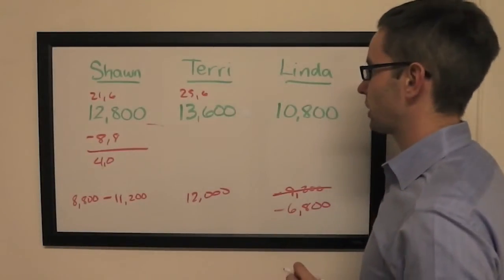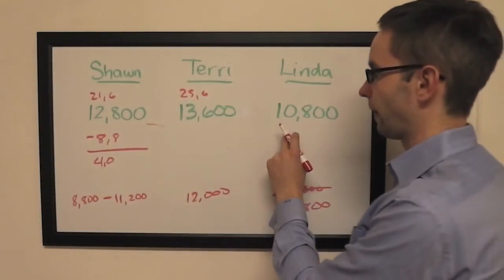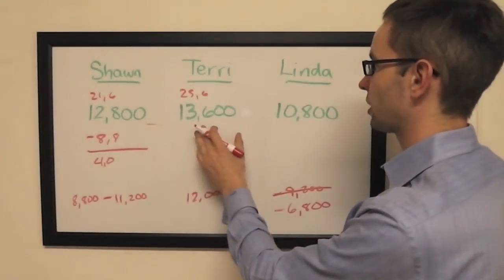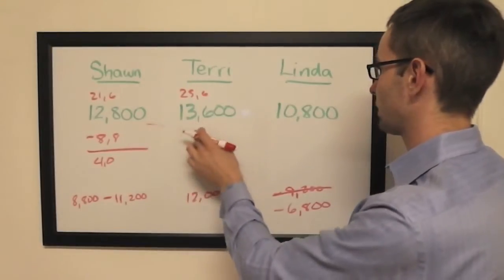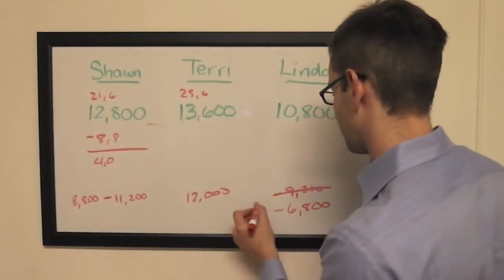Rule number three now, and the only person who can really take advantage of this is Linda, because she is in third place in a close game. To cover a zero wager by both Terry and Shawn, that's $2,800. Double that to cover unsafe wagers by both, then that's $5,600.